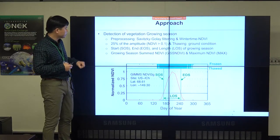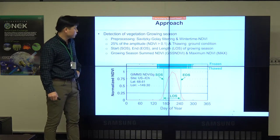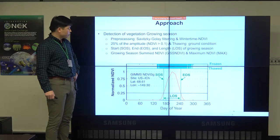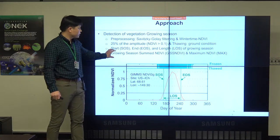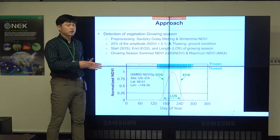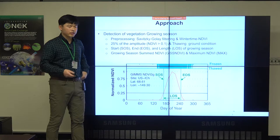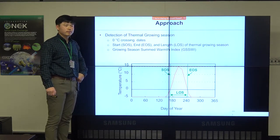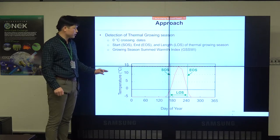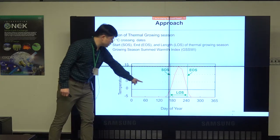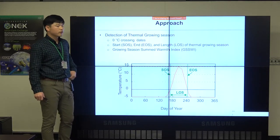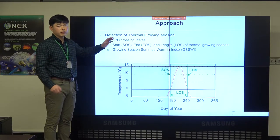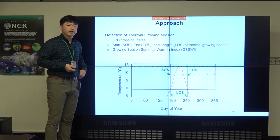From this definition, I extracted the onset of growing season (SOS) and end of growing season (EOS) to calculate the length of the growing season. I also calculated the growing season summed NDVI, called GSS-NDVI, which represents the annual total greenness level of vegetation. For the thermal growing season, I set zero Celsius as a threshold to define the start and end, and I also calculated the growing season summed temperature to compare how warming and greenness change over time.